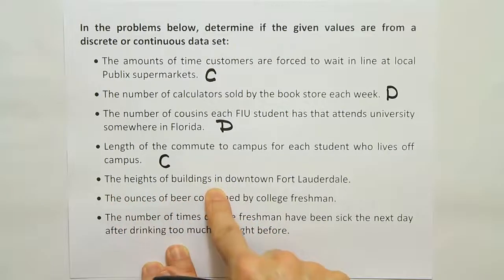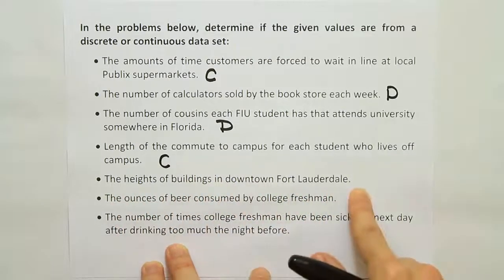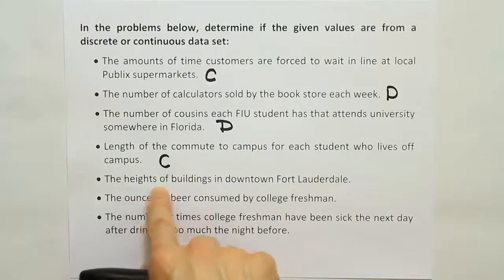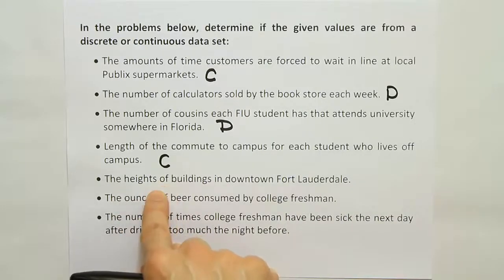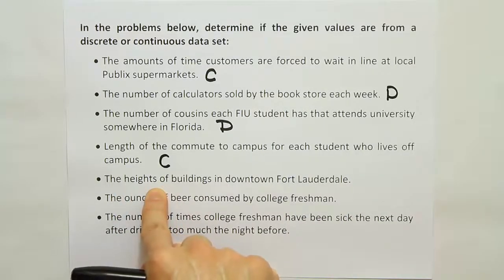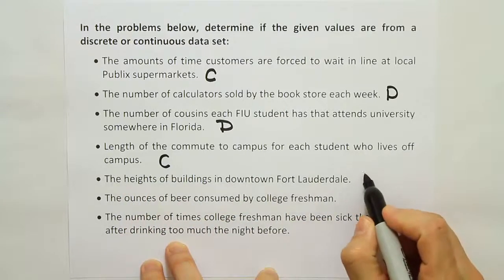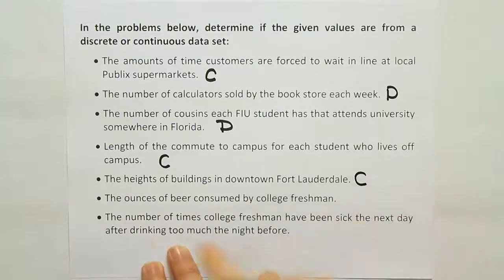The heights of buildings in downtown Fort Lauderdale. To measure the height of a building, you'd take a measurement of some sort. You don't count how tall the building is — you take a measurement of how tall it is. So I'm going to say that data is also continuous.